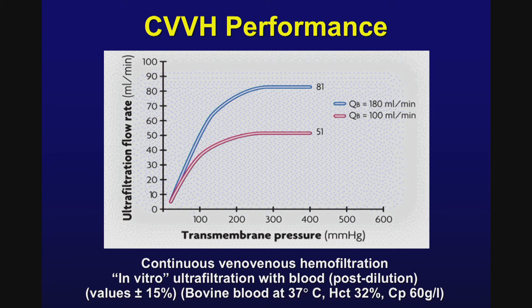This graph shows ultrafiltration flow rate on the y-axis and transmembrane pressure on the x-axis. The blue curve represents a blood flow of 180 mL per minute; the red curve represents 100 mL per minute. As transmembrane pressure increases, the ultrafiltration rate increases, but begins to plateau at around 200 to 250 mmHg. By increasing blood flow by 80 mL per minute up to 180 mL per minute, the ultrafiltration rate can be increased dramatically — from about 40 to 50 mL per minute up to about 80 mL per minute.